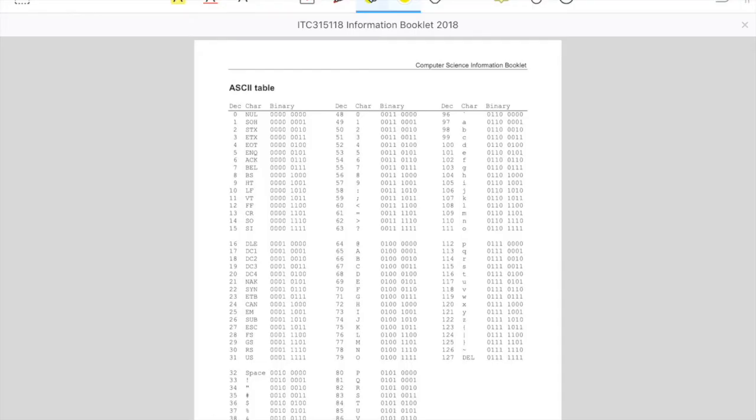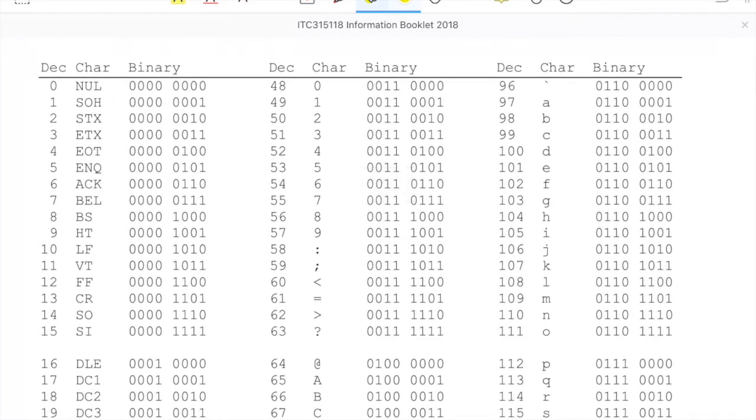So this is an ASCII table and it's provided to every student on the back of their information booklet. For each letter, if we have a look at one particular example, we are given the decimal value of a character, we are given the char value of the character, and the binary value. And so in this case, we can see that 01100001 corresponds to the lowercase letter A.